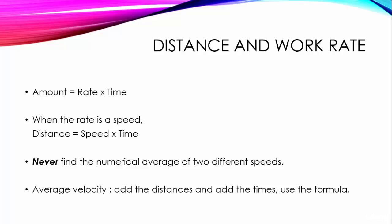In questions about speed, especially where an object travels at one speed for a while, then at another speed, keep in mind that you never find the numerical average of two different speeds. If the question asks for average velocity for the whole trip, then you add the distances from both parts of the trip to find the total distance and add the times of both parts of the trip to find the total time and use those in the formula above to calculate the speed.